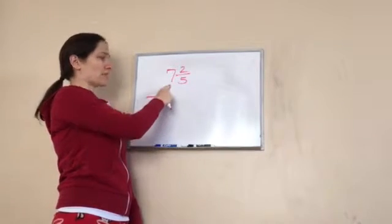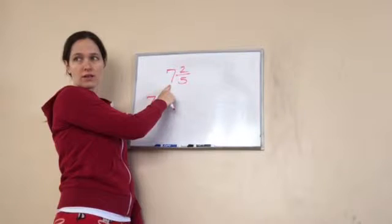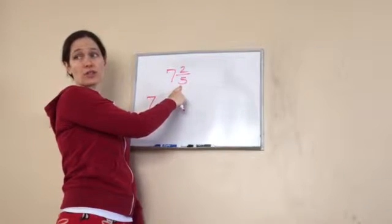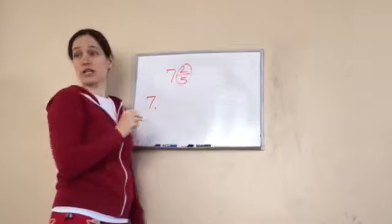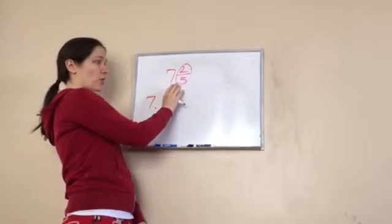Okay, so do I have to do anything to the 7? No. But I do need to do something to the 2 fifths to make this part into a decimal number, because that's what we're doing. We're taking mixed numbers.